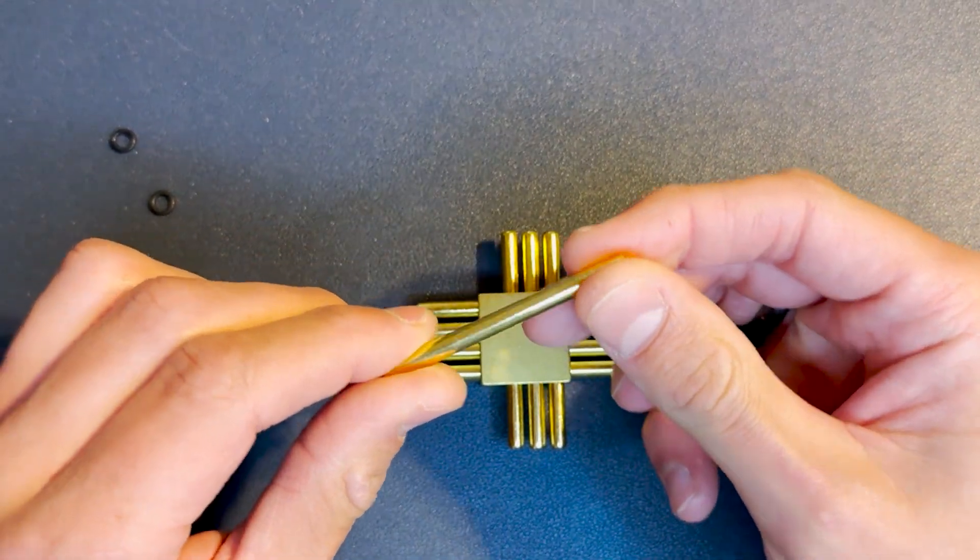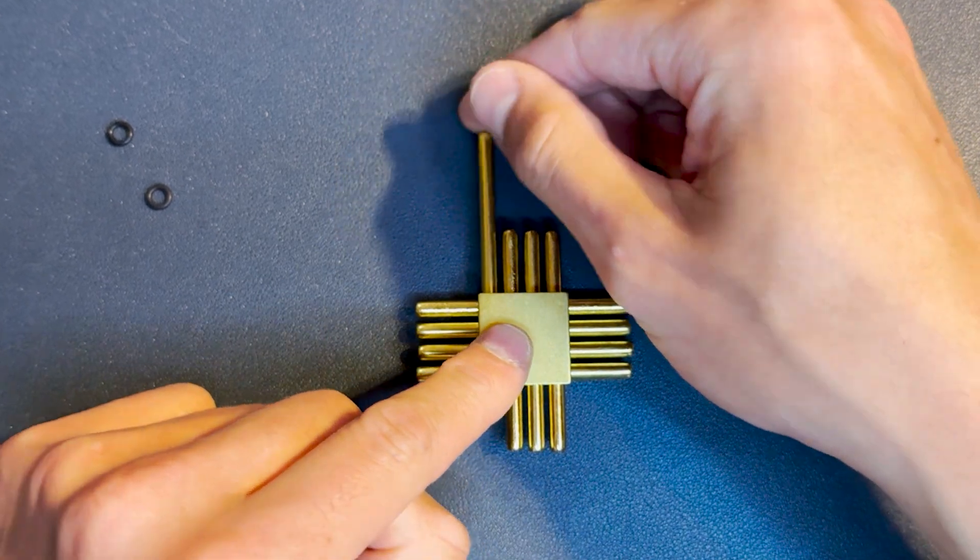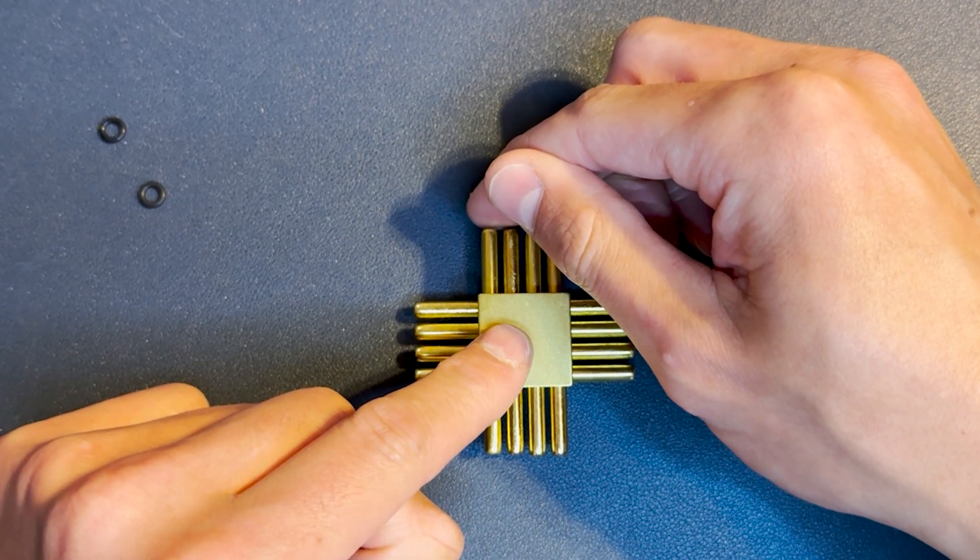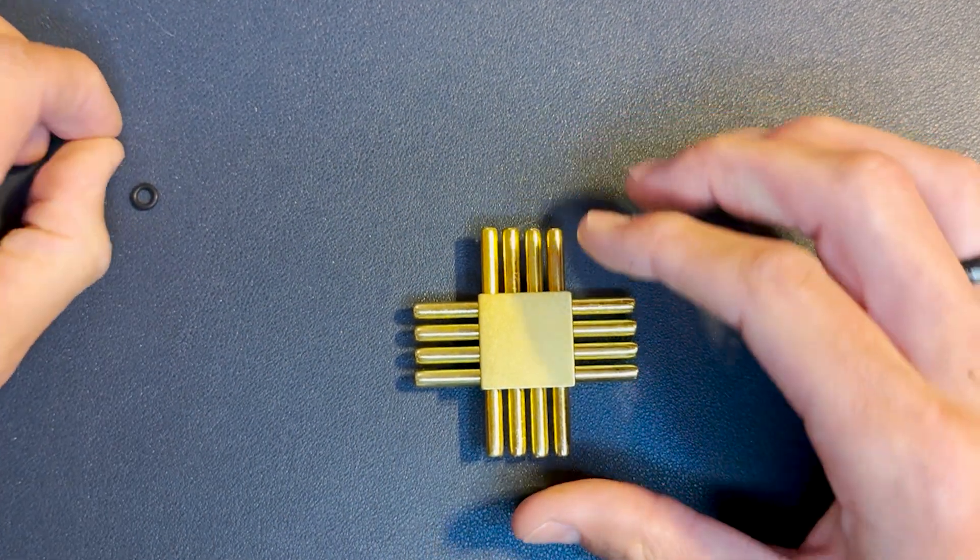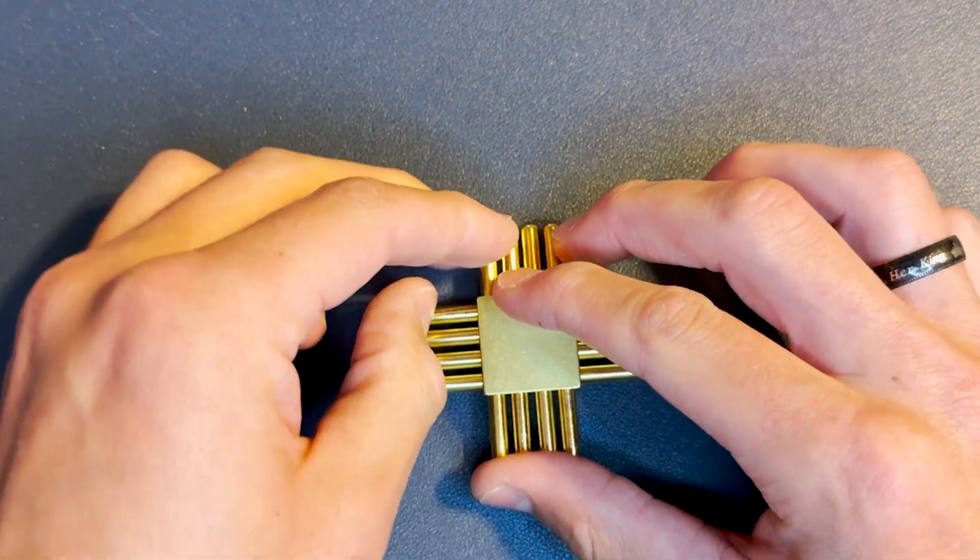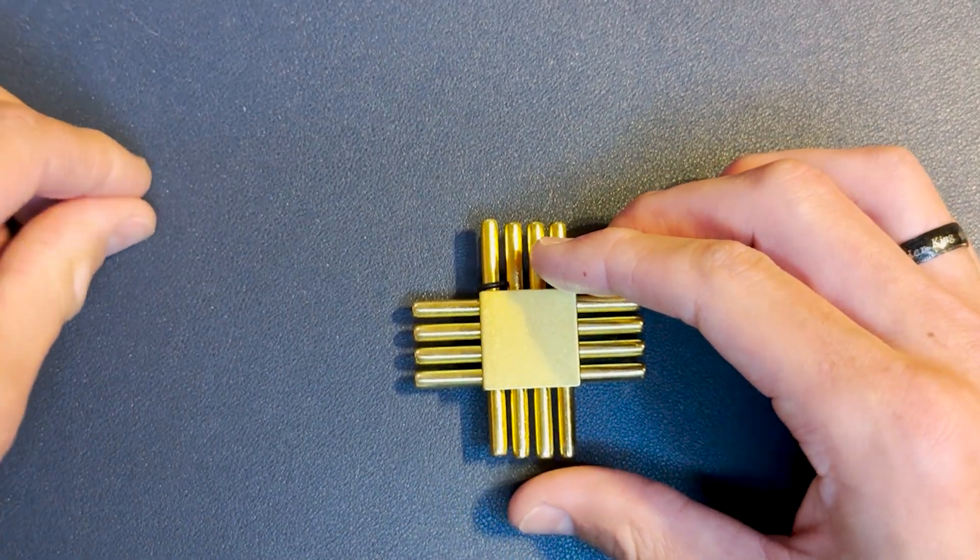And now we have the last one, which is this empty rod. Stick that empty rod in there, should go in no problem. Now the biggest thing here is to put those elastics on before you pick it up, otherwise everything will fall right back down and you'll have to do it all again.